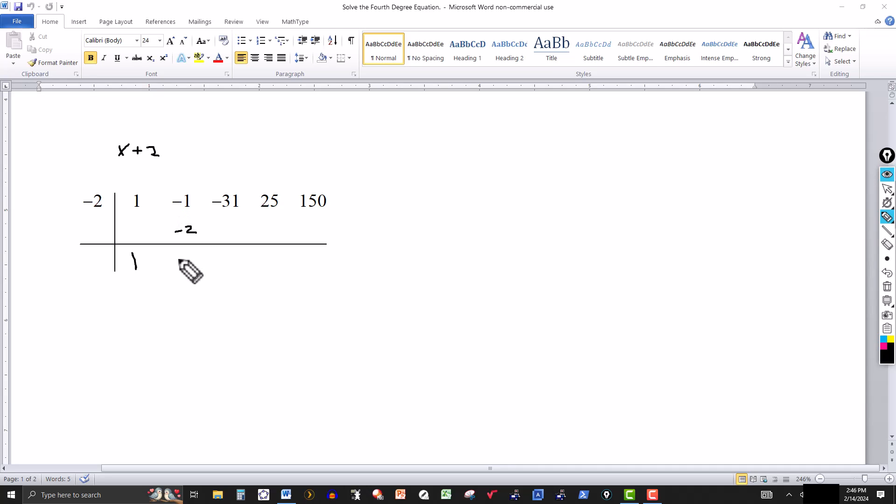Here's how it works. We bring this down. Minus 2 times 1 is minus 2. Minus 1 and minus 2 is minus 3. Minus 2 times minus 3 is 6. Minus 31 and 6 is minus 25. Minus 2 times minus 25 is 50. 25 and 50 is 75. Minus 2 times 75 is negative 150. 150 and minus 150 is 0. This tells me that this is a zero, which also tells me that x plus 2 is a factor.